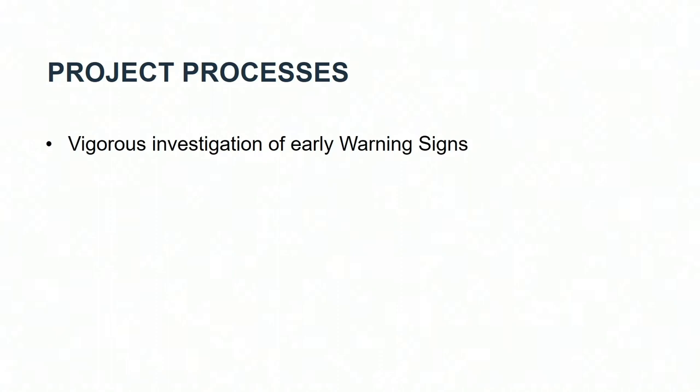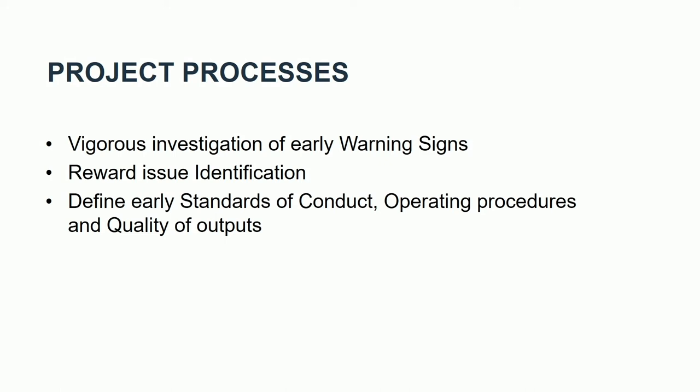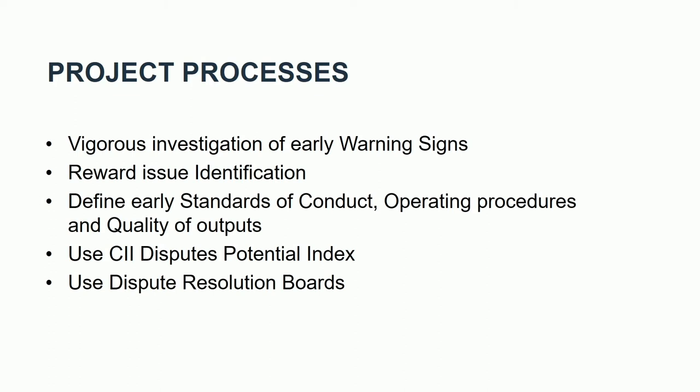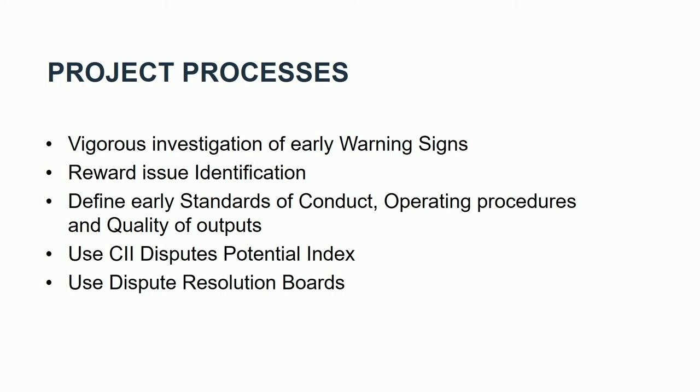In project processes, the theory is to vigorously investigate early warning signs, reward issue identification, and define project standards early and repeat them. Use the Construction Industry Institute's Disputes Potential Index — they're out of Austin, Texas — which allows you to assess the strengths and weaknesses of both the client's and contractor's project teams. Also use dispute resolution boards, which are very popular and effective in New South Wales for managing projects.